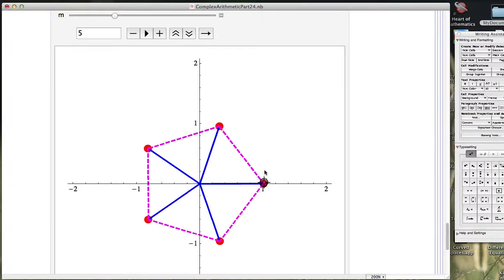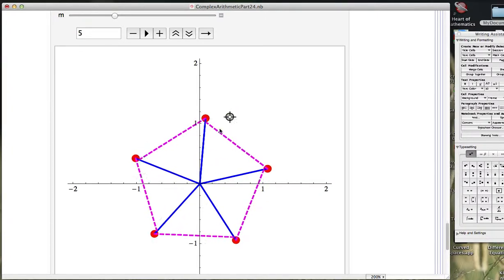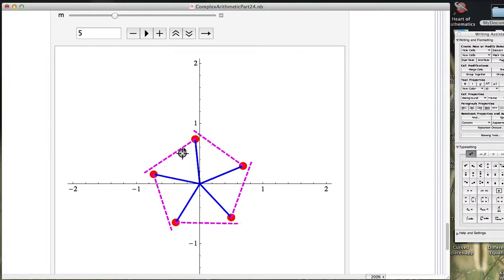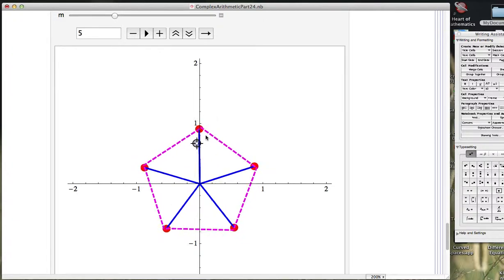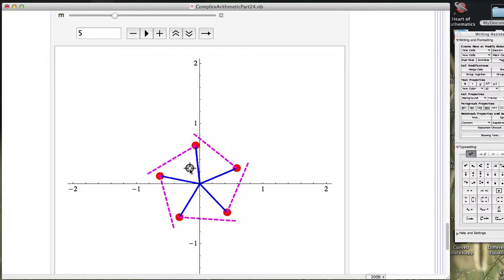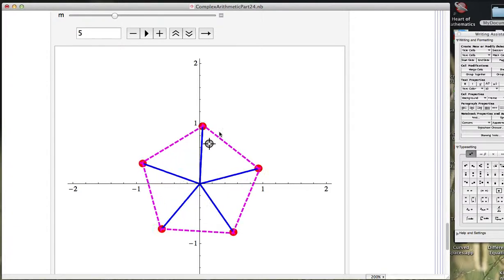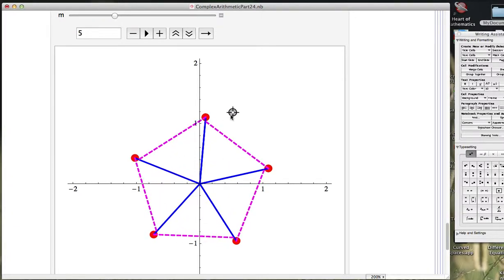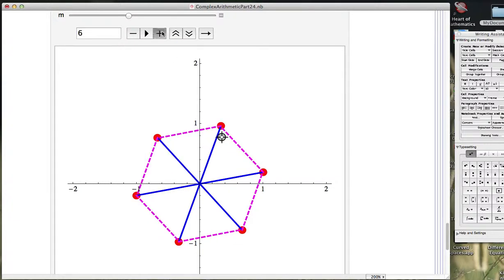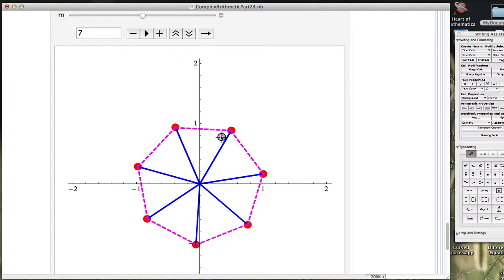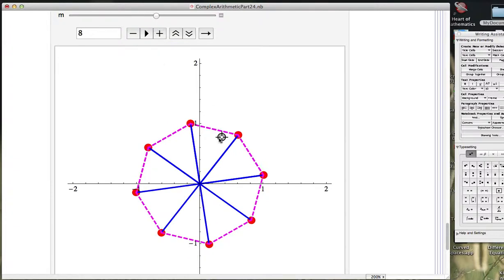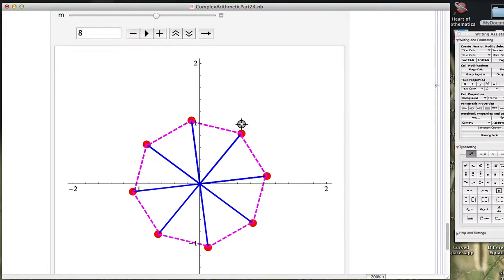We can also continue moving the cursor around to see that our roots, in this case 5th roots, are always going to be a pentagon. There's a little bit of Mathematica problems there. Doesn't look like this is always drawing it accurately, but I'm not going to take the time to try to figure out what's wrong. Here we're looking at 8th roots. We get an octagon. So that's kind of a neat thing about the geometry of roots.